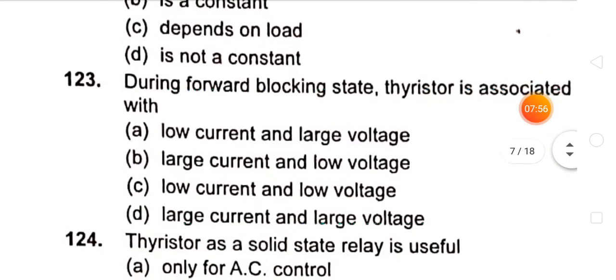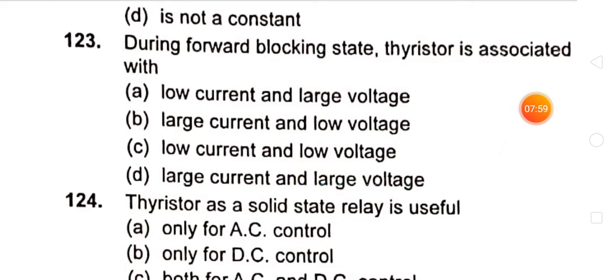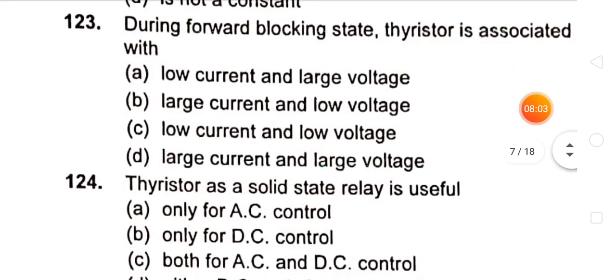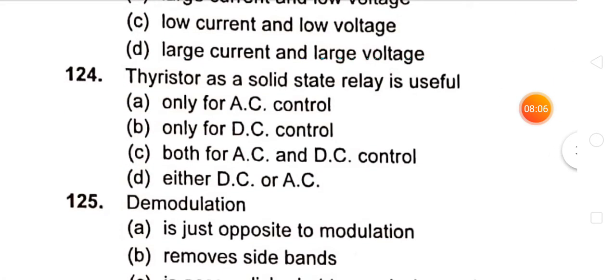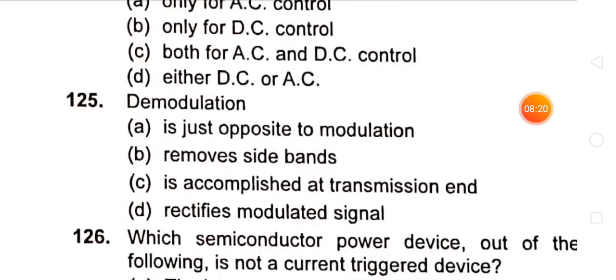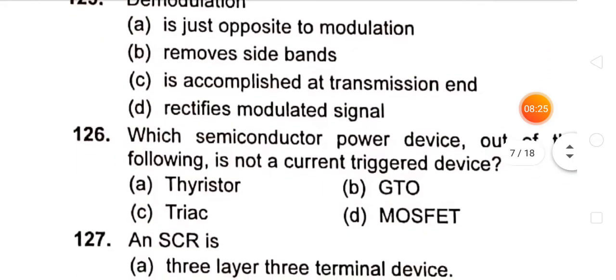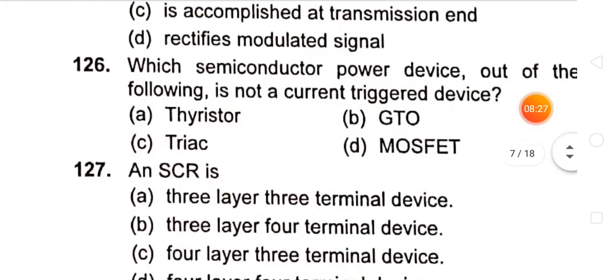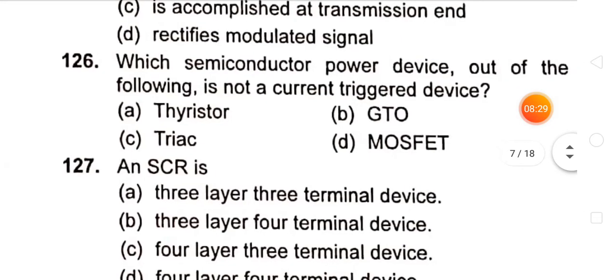During forward blocking state, thyristor is associated with low current and large voltage. Thyristor as a solid state relay is useful only for DC control. Demodulation is just opposite to modulation. Which semiconductor power device is not a current triggered device?